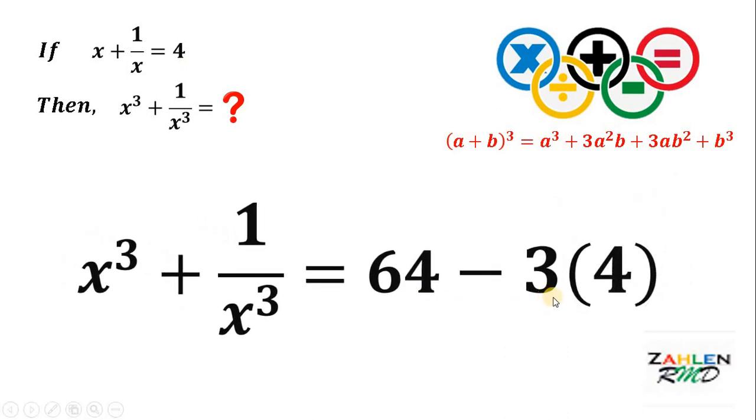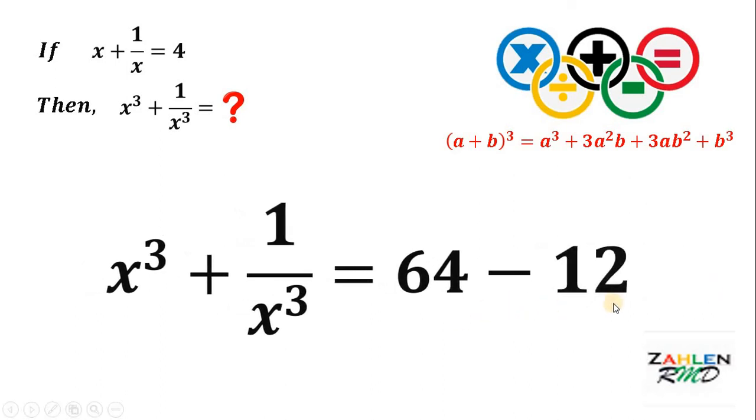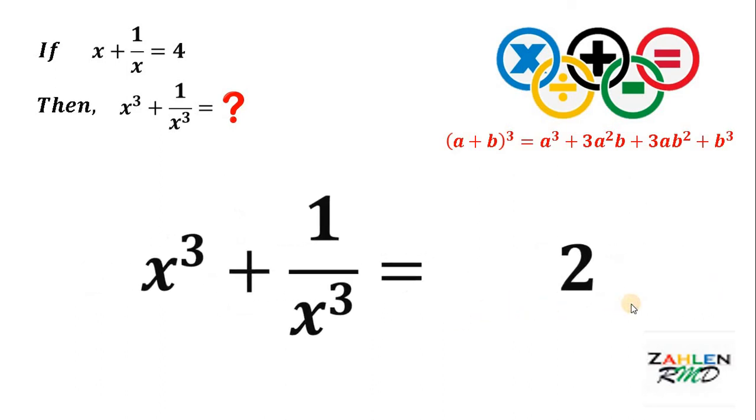So, we have 64 minus 3 times 4. Now, 3 times 4 will give us 12. And 64 minus 12 will give us 52.